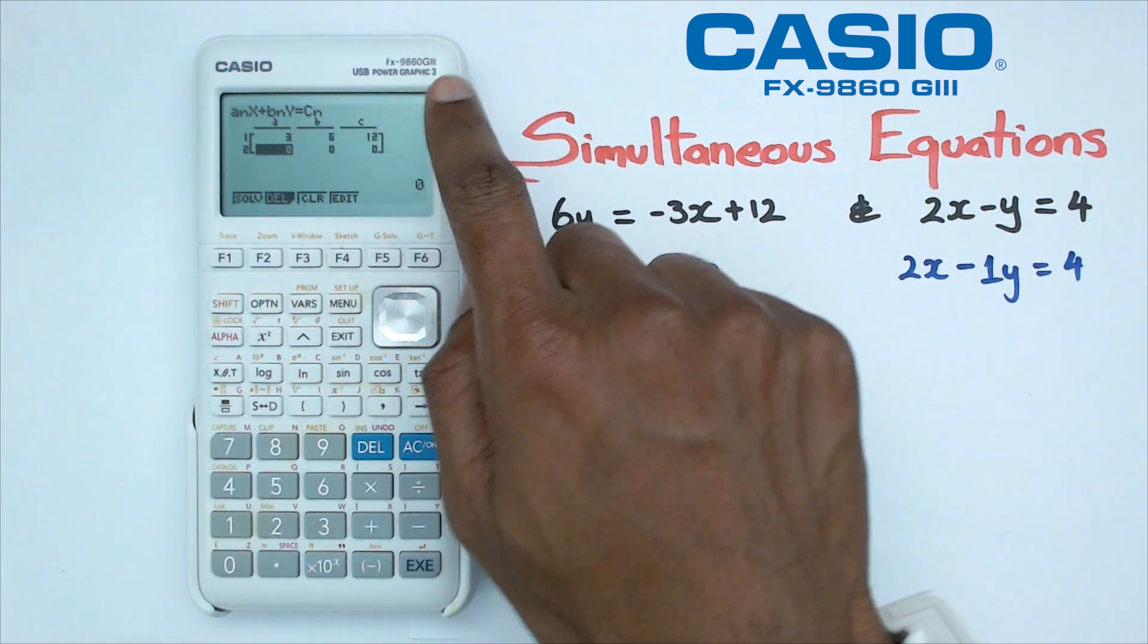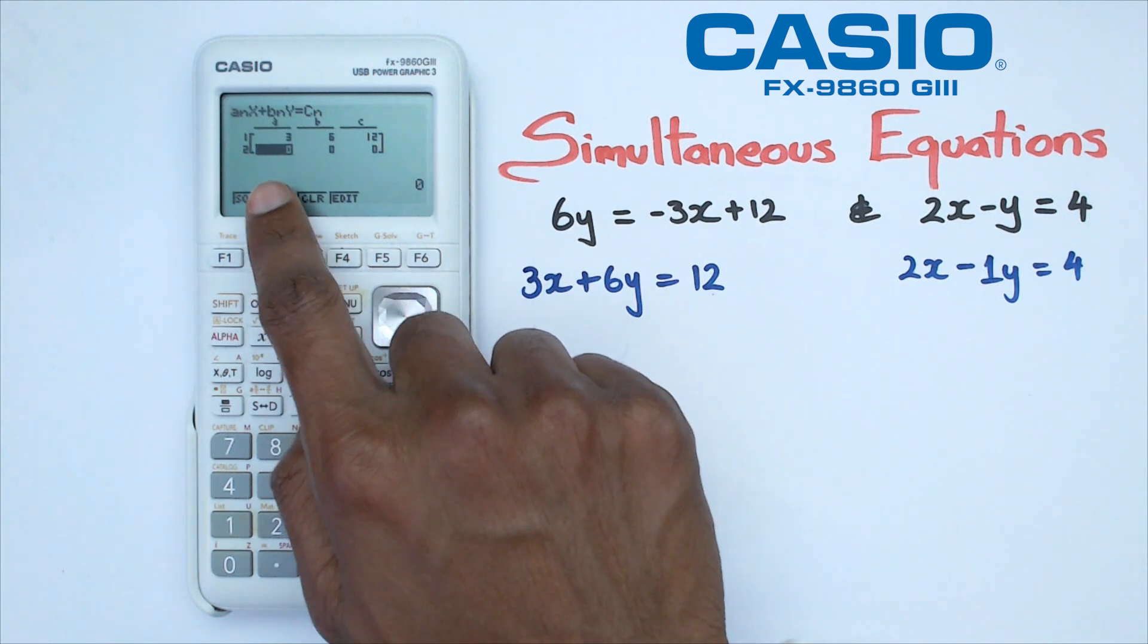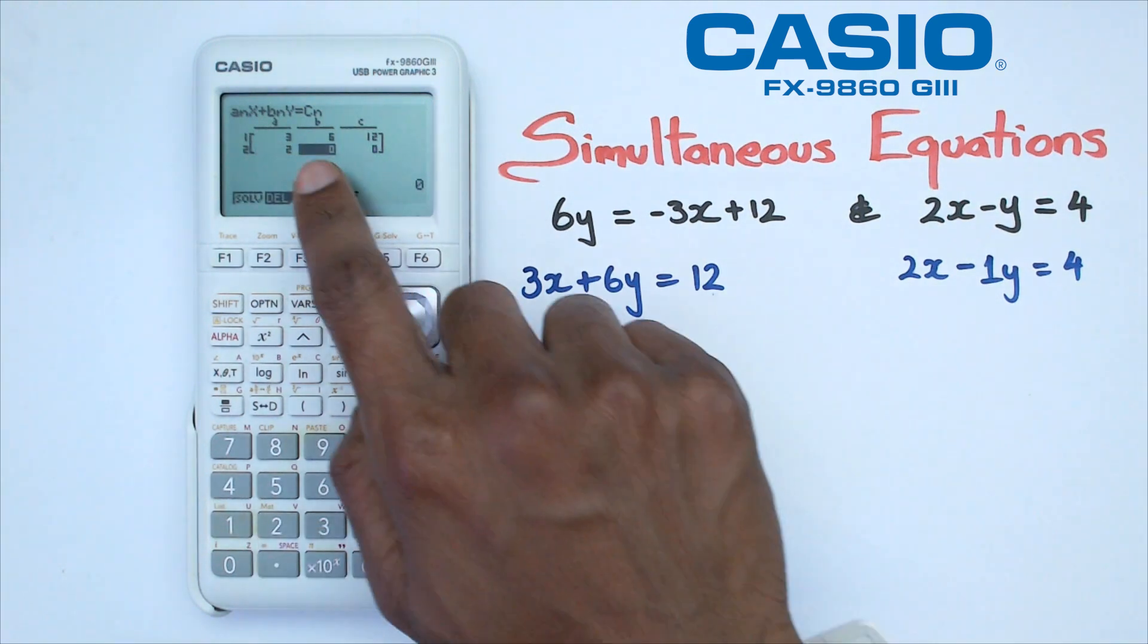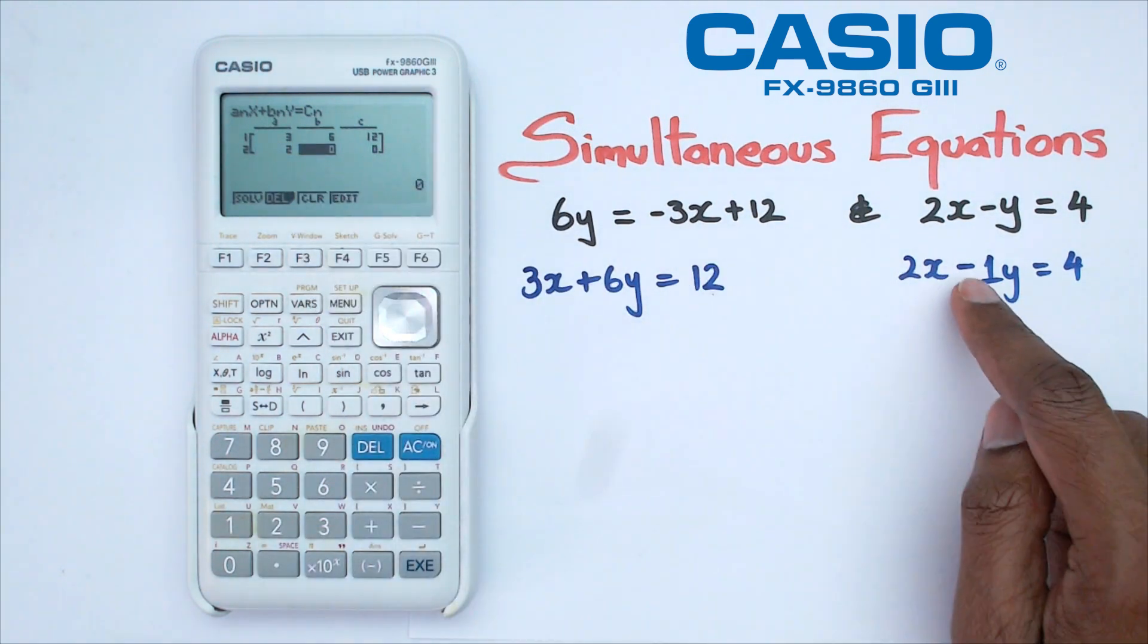It automatically moves me to the second equation. For the second equation, I have 2 as my A value because that is the coefficient of X. Then the coefficient of Y. Remember how I put it as a 1 there,